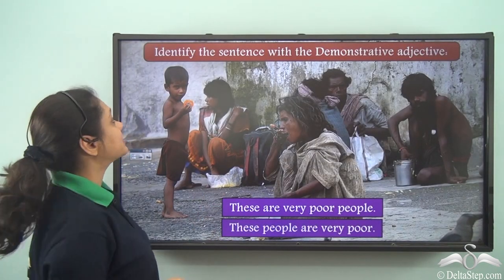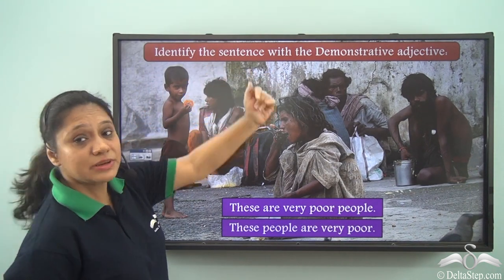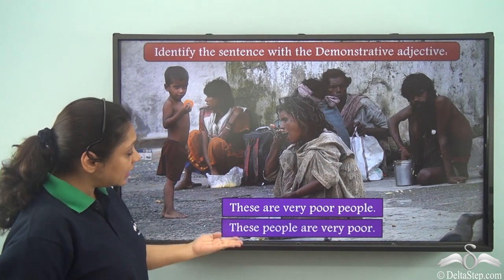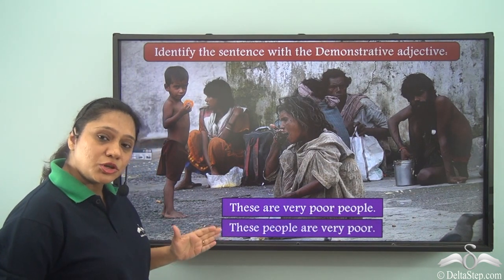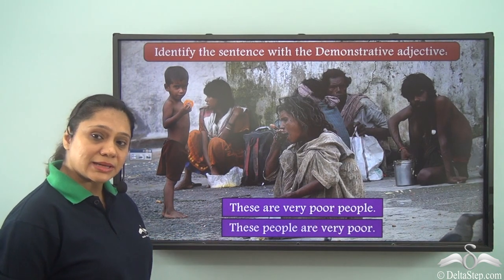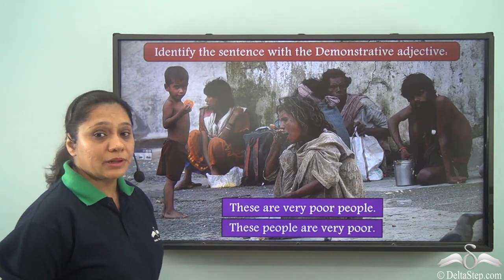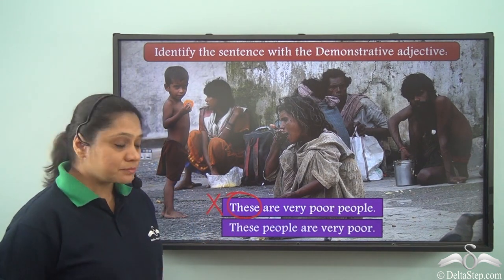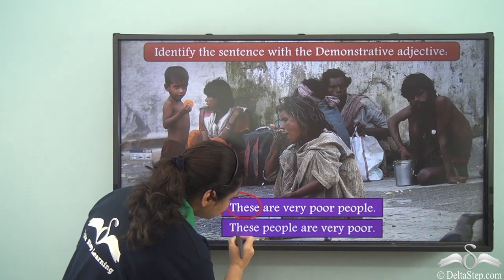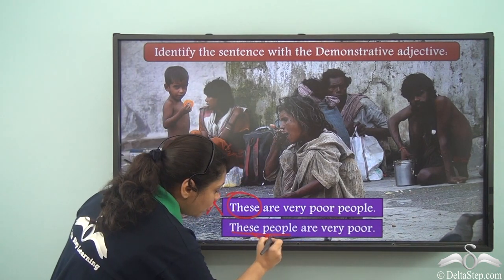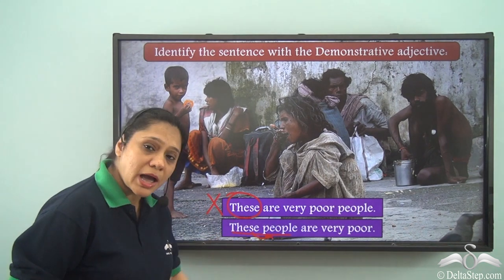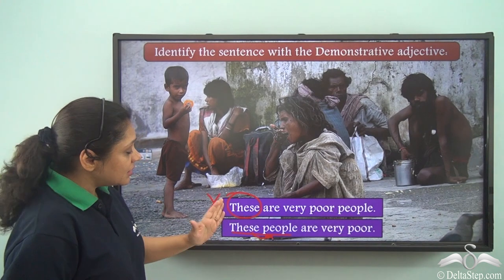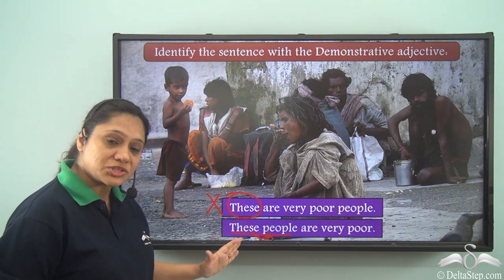Now let us do this exercise: identify the sentence with the demonstrative adjective. The two sentences are 'These are very poor people' and 'These people are very poor.' In the first sentence, 'these' is standing alone and not modifying any noun, so it is not a demonstrative adjective. In the second sentence, 'these' is referring to a particular set of people and modifying the noun 'people,' placed before it. Hence the sentence 'These people are very poor' has the demonstrative adjective 'these.'